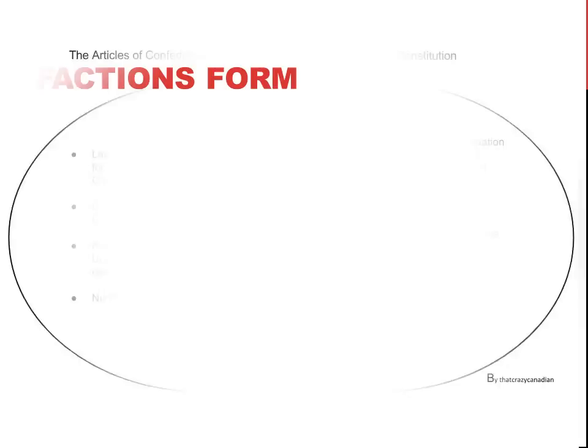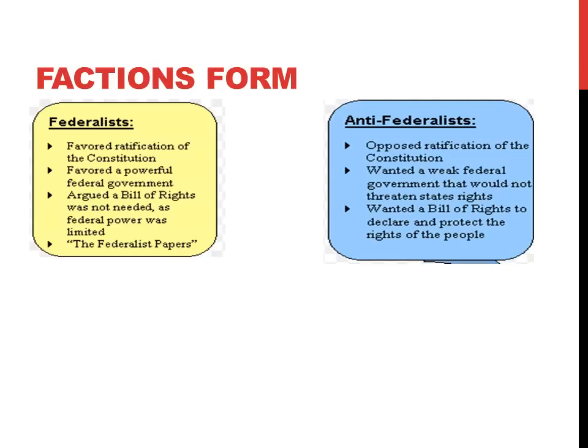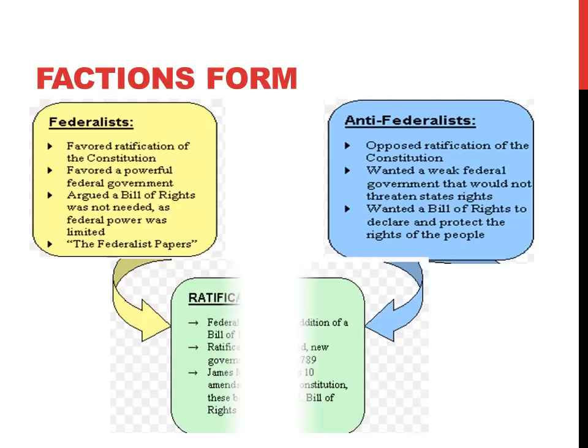Following the Constitutional Convention, the delegates from each state returned home, understanding that 9 out of 13 state legislatures would need to vote on ratification of the Constitution. Immediately, factions formed over the original document. The Federalists believed in the original draft and favored a stronger federal government, arguing that a Bill of Rights was not necessary because federal power would already be limited by state constitutions. The Anti-Federalists feared that state sovereignty would be taken over by a too-powerful federal government, and wanted a Bill of Rights to clearly define their rights and liberties. Finally, a compromise was reached in which James Madison wrote the first Ten Amendments, now known as the Bill of Rights.